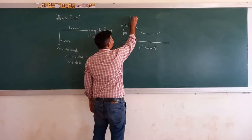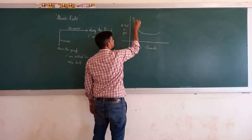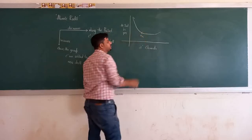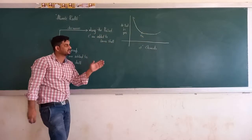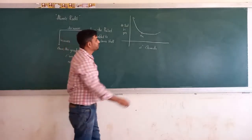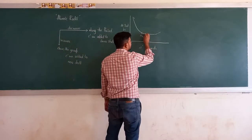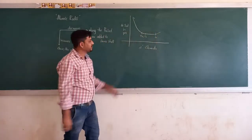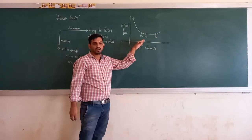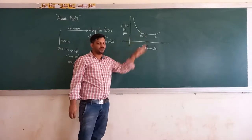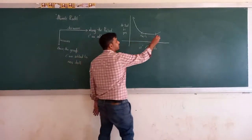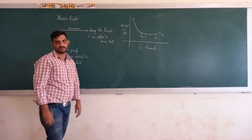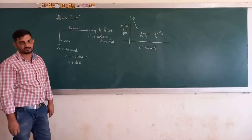So from scandium to manganese there is a gradual, continuous decrease in atomic radii. From iron to copper there is almost the same or comparable atomic radii. And from copper to zinc there is an increase in atomic radii.